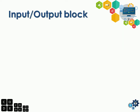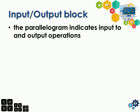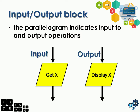Next, we have the input and output block. The parallelogram indicates input or output operations. This is an example of an input and output block. For the input, you can use the verbs get, enter, or input — those are the verbs you can use inside the input block. For the output block, you can use the verbs display or print.